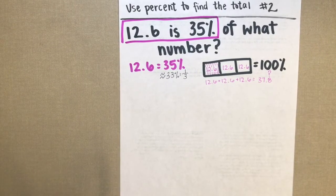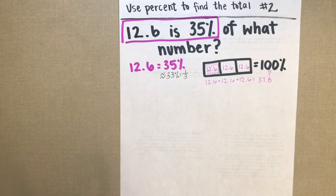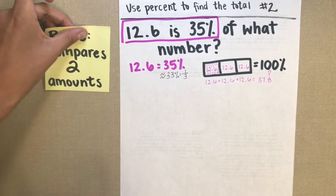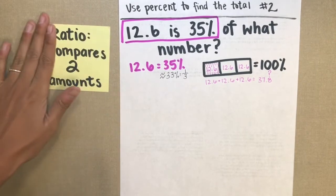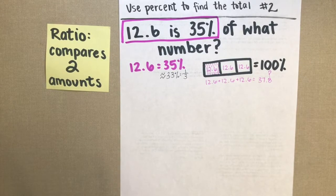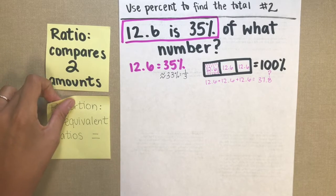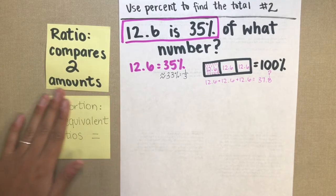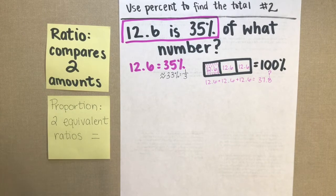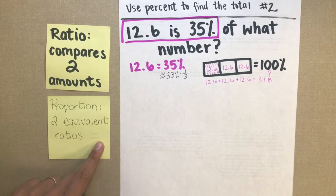There are two vocabulary terms that we're going to need to solve. The first one is a ratio. So a ratio is just a math sentence that compares two amounts. And the second one is a proportion. So we're going to use a proportion to solve this problem today. Remember that a proportion is just two equivalent or equal ratios.